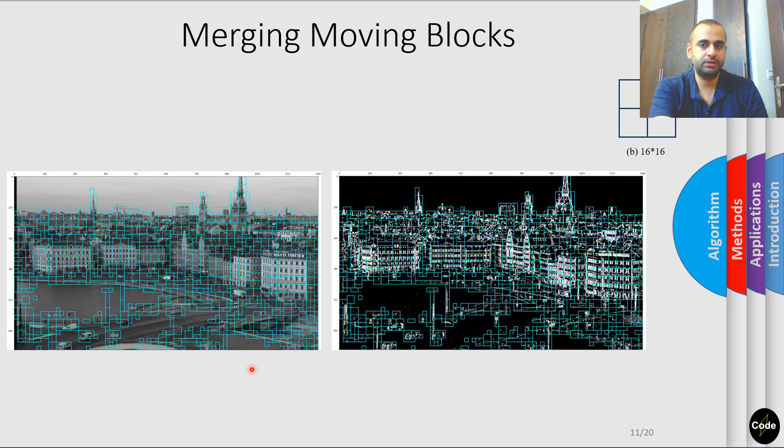For higher resolution images like the one we have here, we adjust the block sizes accordingly. We start with 16 by 16 pixel blocks as the base block. Then, we create different structures. Up until now, we've implemented a model for generating blocks with variable shapes and sizes that can be employed in various block matching algorithms.